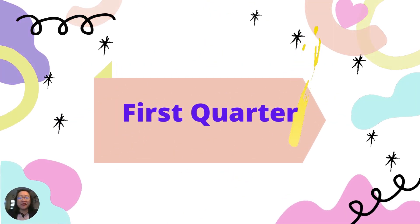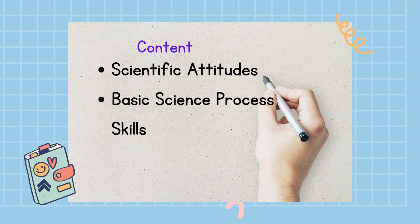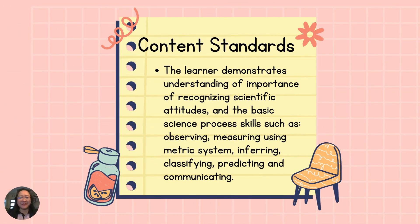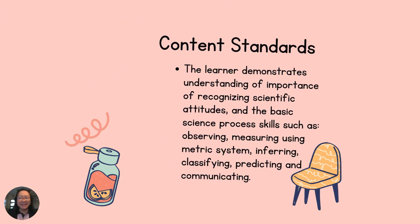For the first quarter, content is about scientific attitudes and basic science process skills. Content Standards: The learner demonstrates understanding of the importance of recognizing scientific attitudes and the basic science process skills, such as observing, measuring, using the metric system, inferring, classifying, predicting, and communicating.